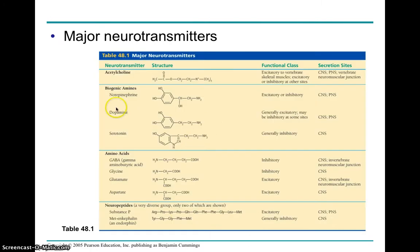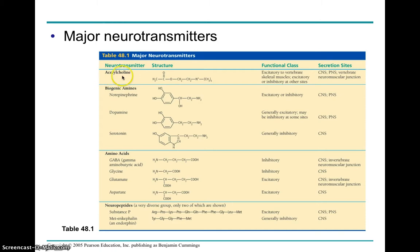Here are some of the major neurotransmitters. For the AP test, the recommendation is to memorize one of the main ones — understand the name, whether it's excitatory or inhibitory or both, and where it works. The one recommended is acetylcholine — it's probably the most common one. It's involved in the neuromuscular junction, where a neuron synapses with a muscle cell.